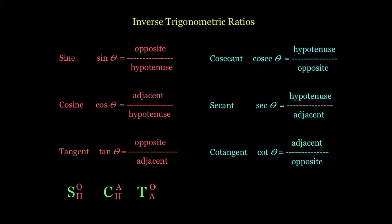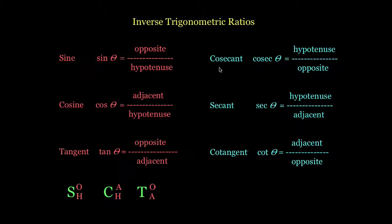If you learn enough trigonometry you're eventually going to come across three new inverse trigonometric ratios. They simply mean that you're taking sine, cosine, and tan and flipping them upside down. So we know that sine theta is equal to opposite over hypotenuse. The new one is called cosecant, shortened to cosec theta, and that's hypotenuse over opposite — the inverse of sine.